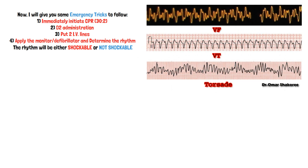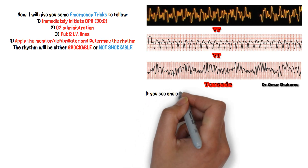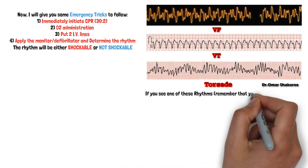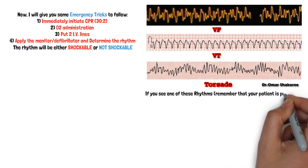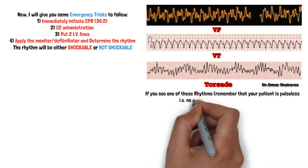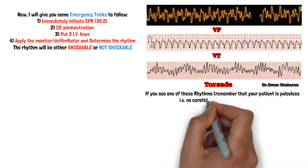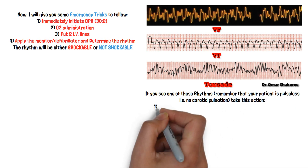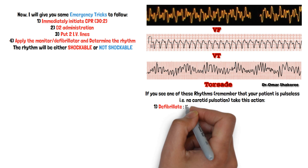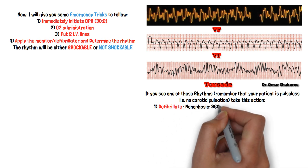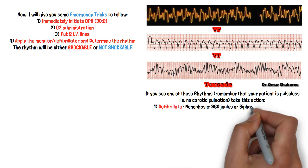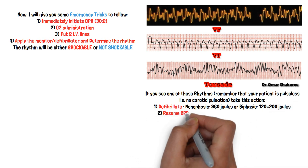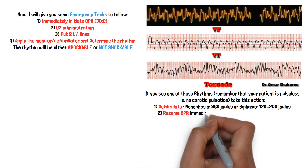As you see here, shockable rhythms are three types: VF, VT, and Torsades de Pointes. VF is ventricular fibrillation, VT is ventricular tachycardia with no pulse — as you know, VT with pulse has another type of treatment.